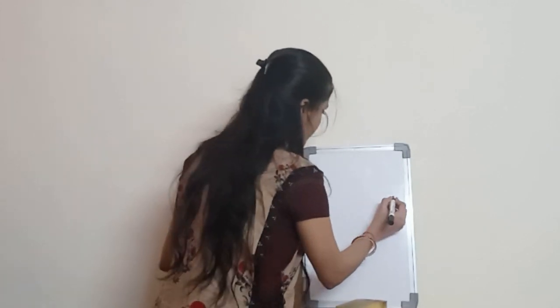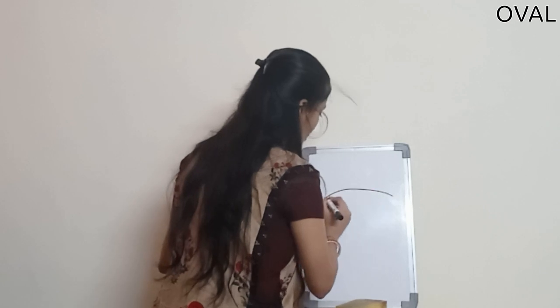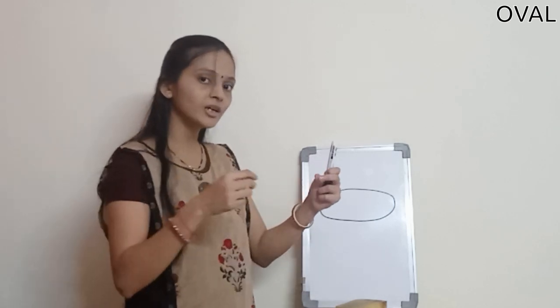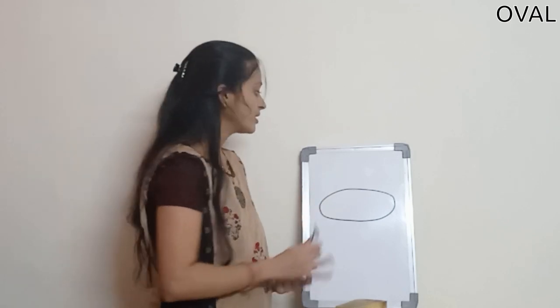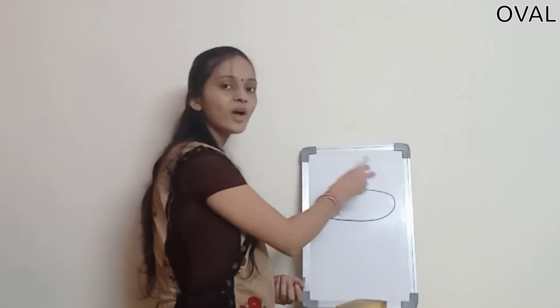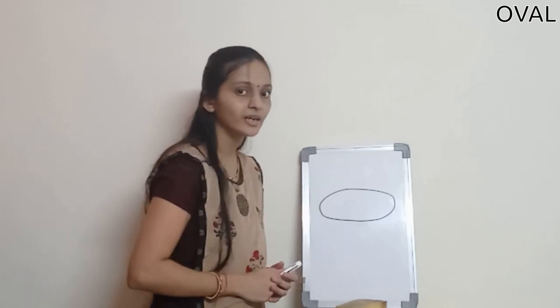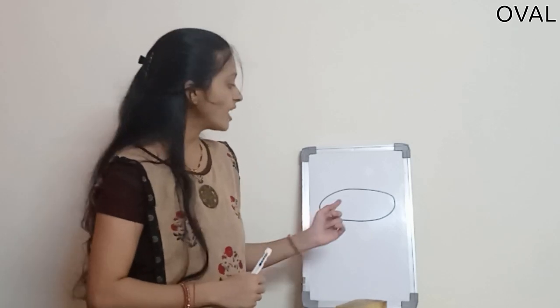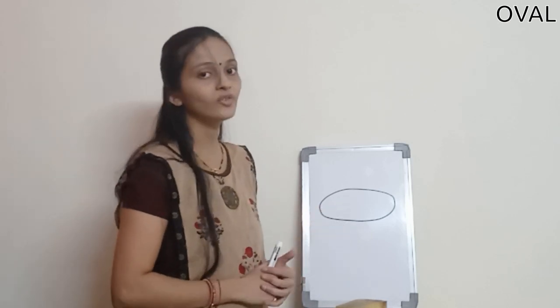Now let's move on to our next shape, that is an oval shape. Kids, this is an oval shape. If you stretch a circle a little bit, you will get this oval shape. As you can see, this shape also has only one side. We have eggs, watermelon, kiwi, which are also of oval shape.